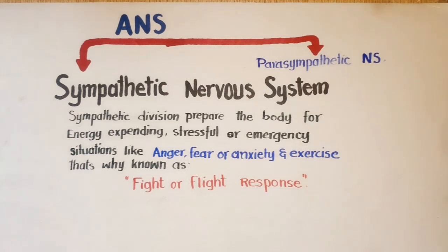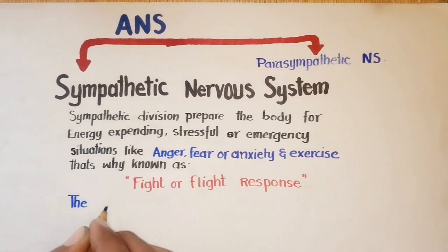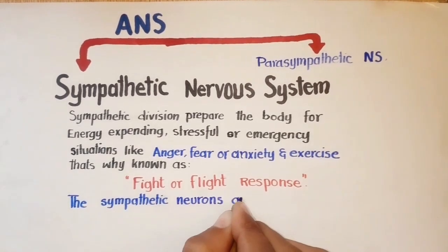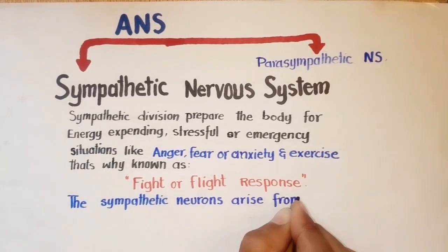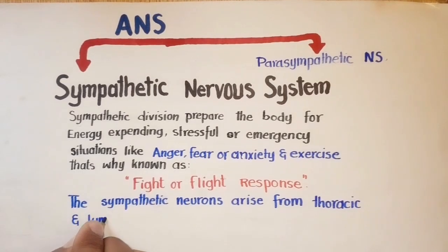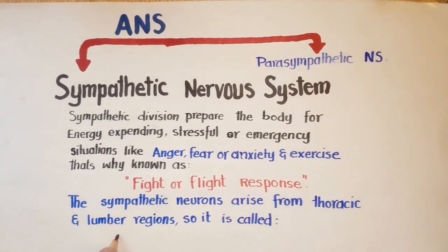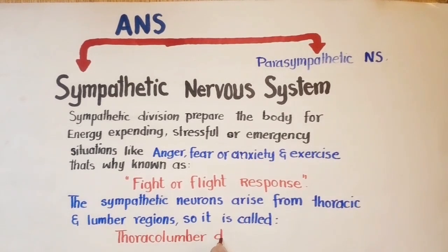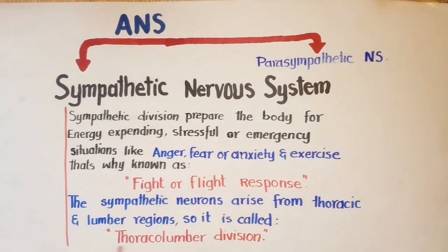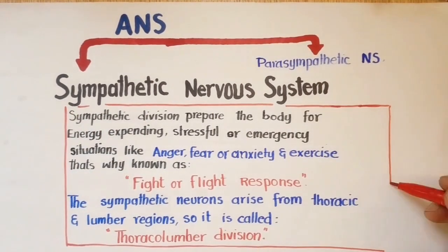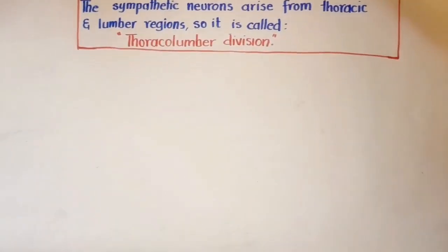The sympathetic neurons arise from the thoracic and lumbar regions of the spinal cord, so this division is also called the thoracolumbar division. Going into more detail on the anatomy and physiology of the sympathetic nervous system: